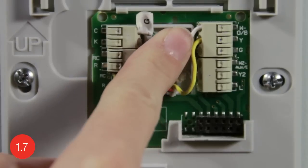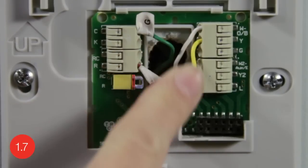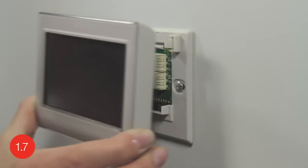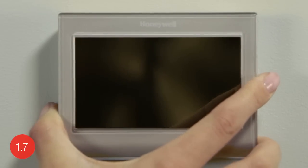After you've finished connecting all the wires, push any excess wire back into the wall opening. Align the thermostat with the wall plate and snap it in place.